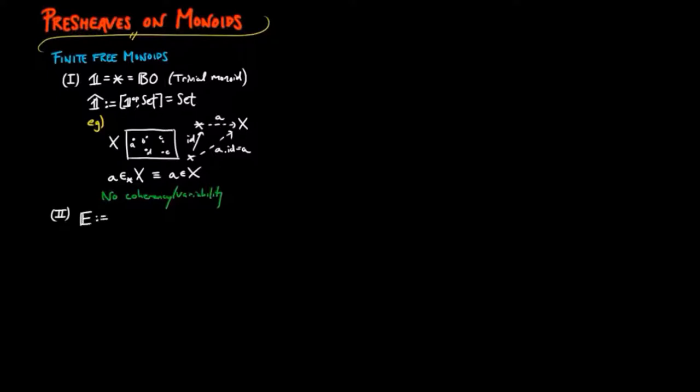Second, if E is the monoid generated by one non-identity morphism sigma, in other words, E is the additive monoid of natural numbers, we obtain the category of evolving sets, or n-sets, as the category of pre-sheaves on E.